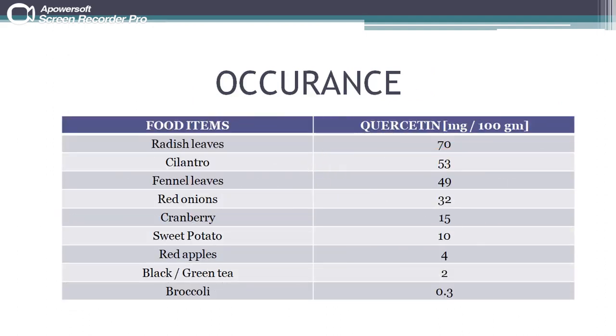Quercetin is found in many food items, with the highest percentage found in radish leaves and the lowest in broccoli. However, the majority of quercetin is obtained from red onions, which is 32 mg per 100 g.